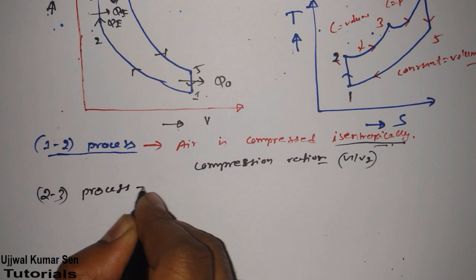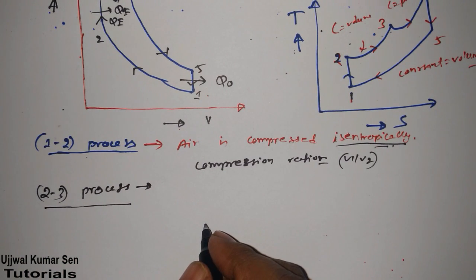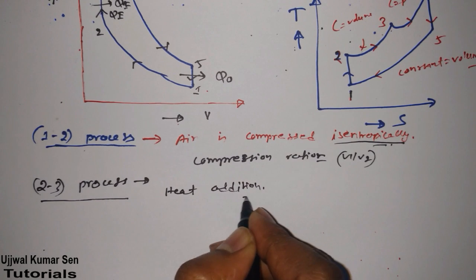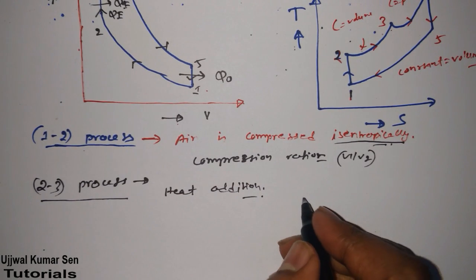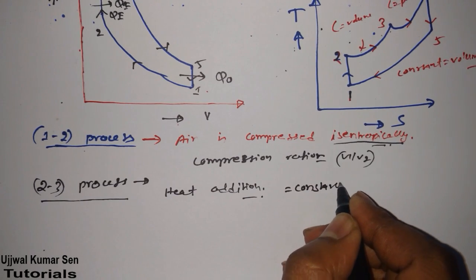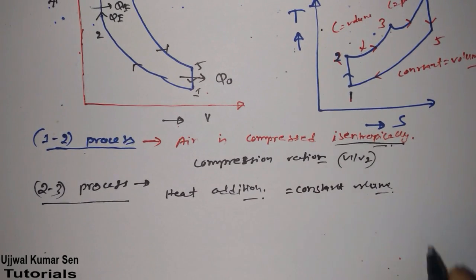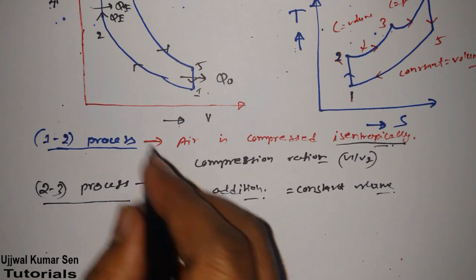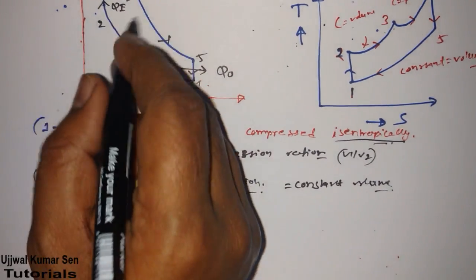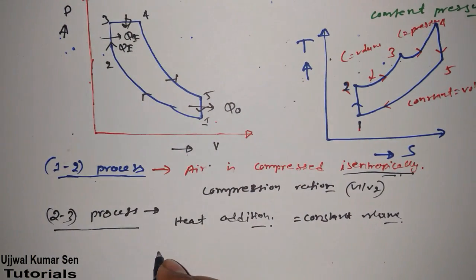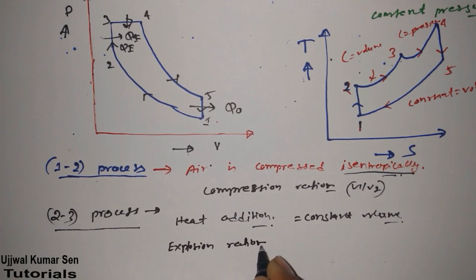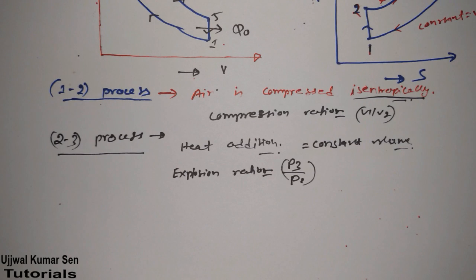For process 2→3: heat addition is taking place at constant volume. Although volume is constant, pressure is increasing from 2 to 3. The explosion ratio — also called the pressure ratio — is equal to P3 divided by P2.